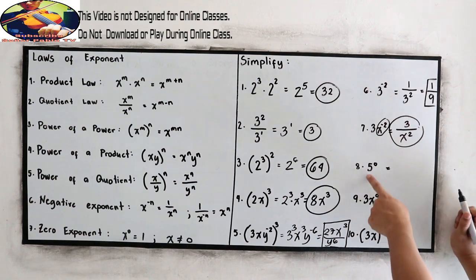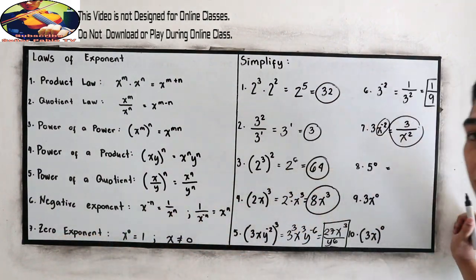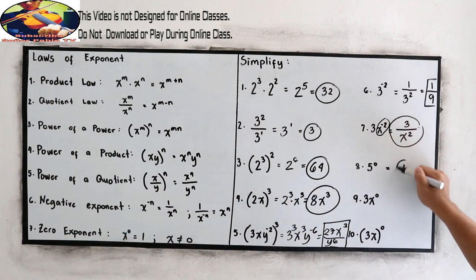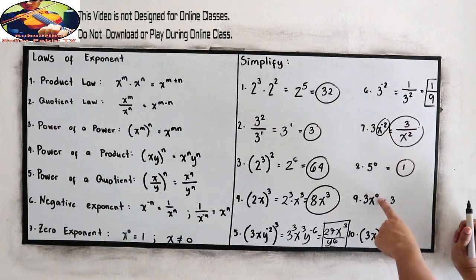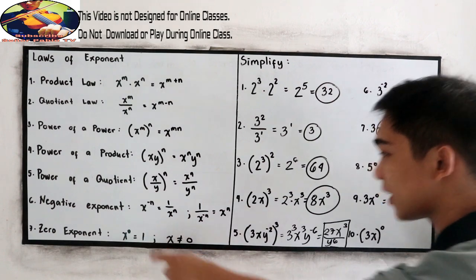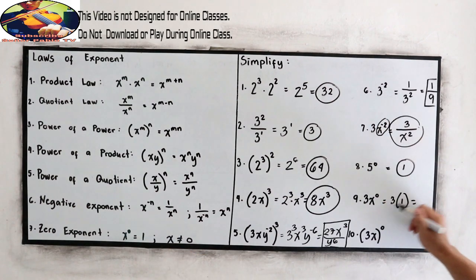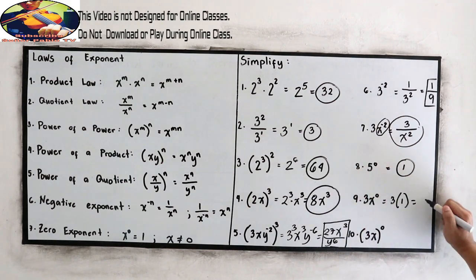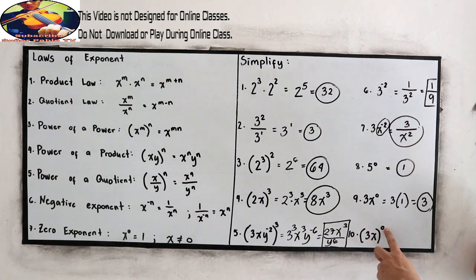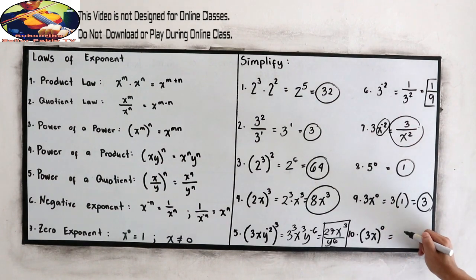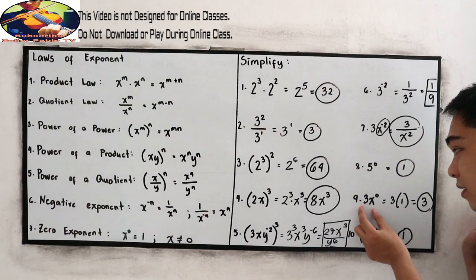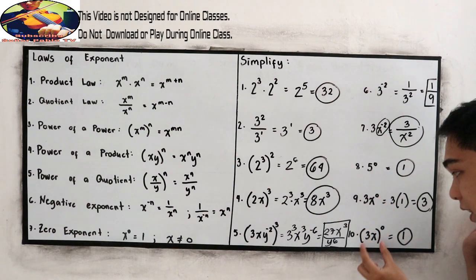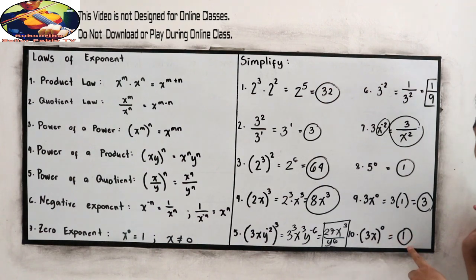Number 8: 5 raised to 0. We apply the zero exponent rule — this equals positive 1. Number 9: 3 times x raised to 0. Since x raised to 0 equals 1, this is 3 times 1, which equals 3. Notice the difference: in number 9, only x is raised to 0, but in number 10, quantity 3x is raised to 0, so the final answer there is 1.